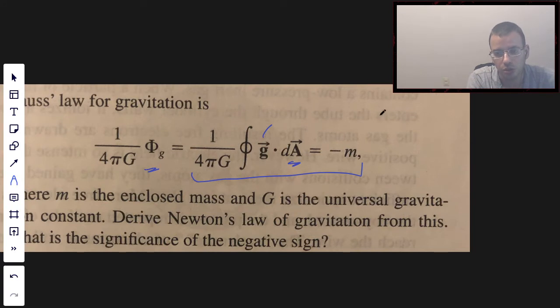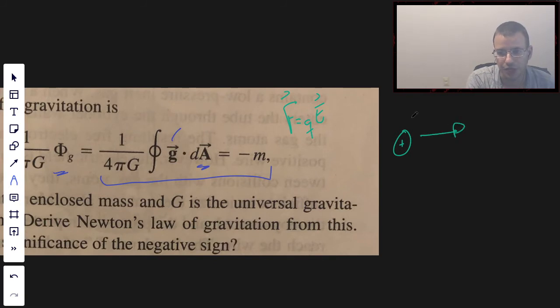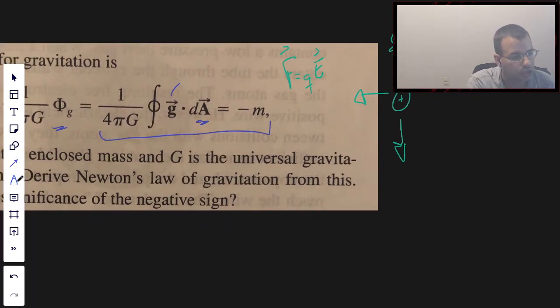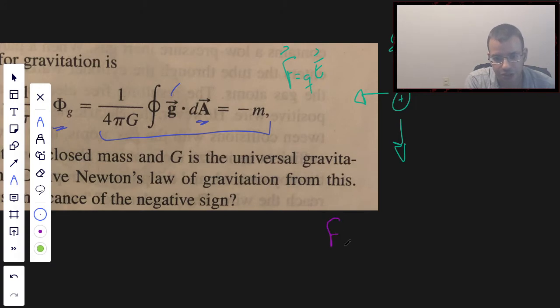You're probably used to force equals QE, where electric force is a charge times an electric field, where you have some sort of charge and it just shoots off electric fields radially outwards. Well, you can say the same thing about gravity. So force due to gravity is going to equal some mass times G, and this G is going to be a gravitational field.